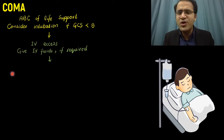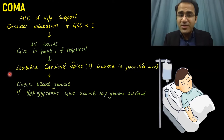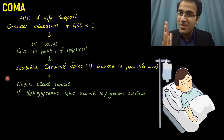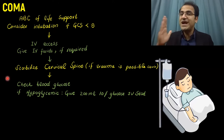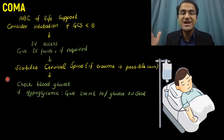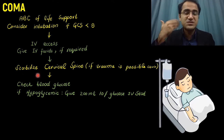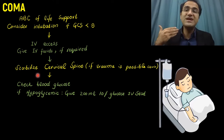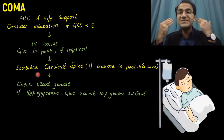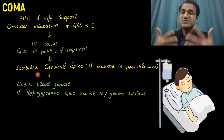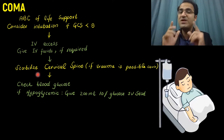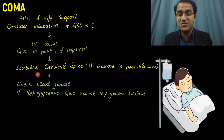Give IV fluids if required. If you suspect trauma as a possible cause of coma — for example, if the patient had a motor vehicle accident — the first thing is that you have to stabilize the cervical spine, as there may be a suspected cervical injury that can injure the spinal cord.